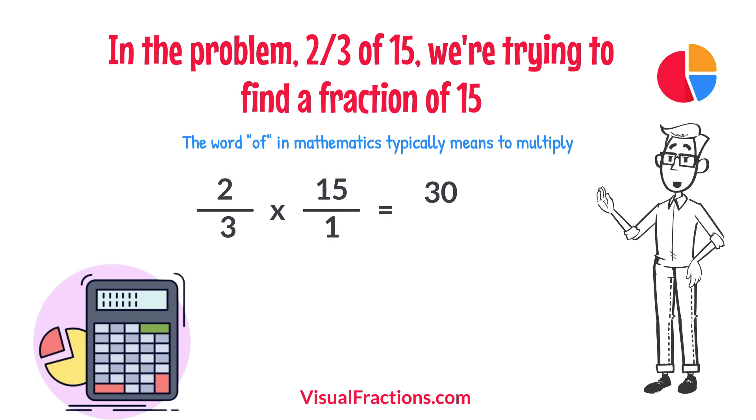Next, multiply the denominators, 1 times 3 equals 3. We now have a new fraction, thirty-thirds.